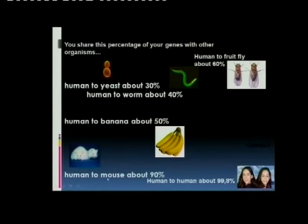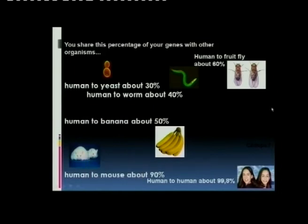A mouse shares about 90% of our DNA. And between humans, there's a 99.8% similarity of DNA, unless it's identical twins — then it is 100%.